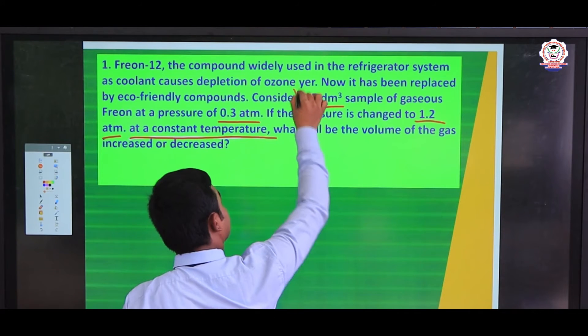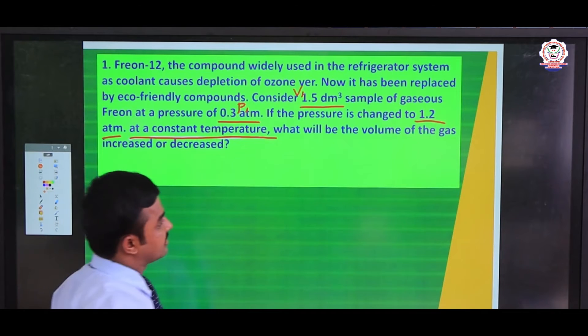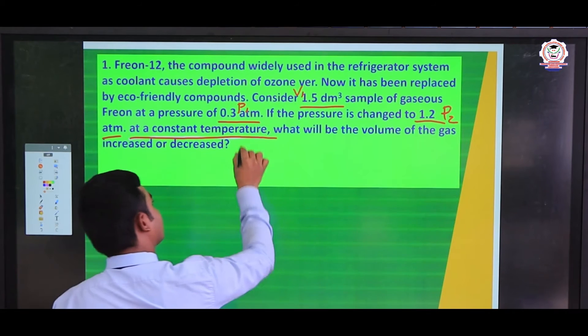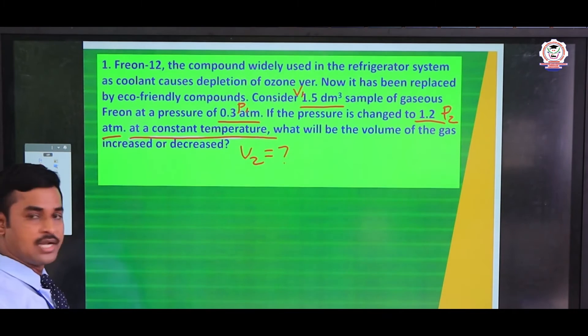First volume here is given V₁ and first pressure P₁ is given here, and the second pressure P₂ is given here. They asked what is the value for V₂. Now we want to find the V₂ value.